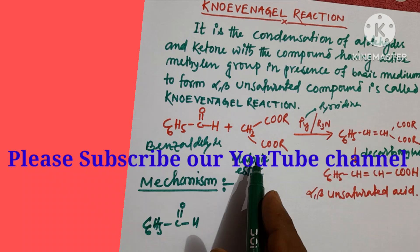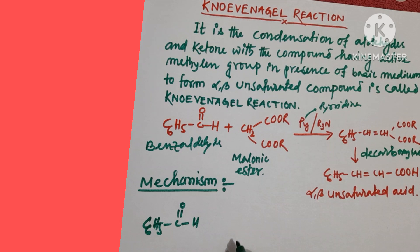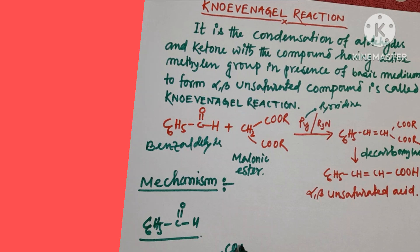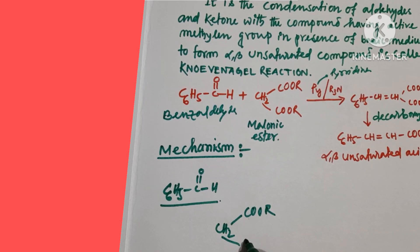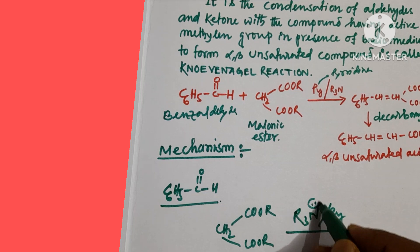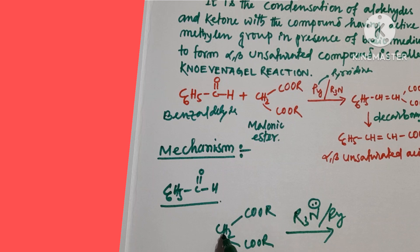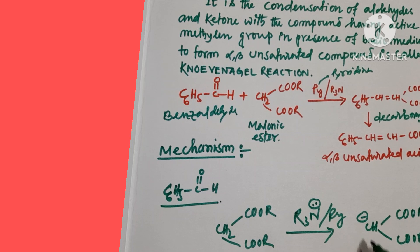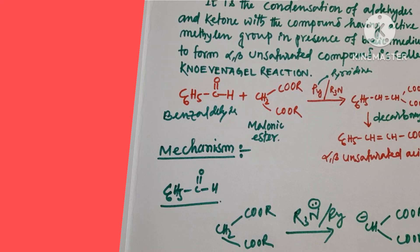At first, the malonic ester CH2(COOEt)2 in the presence of base R3N or pyridine — the lone pair of the base takes up one proton to form a carbanion: minus CH minus with two COOR groups. That anion will then react with benzaldehyde.